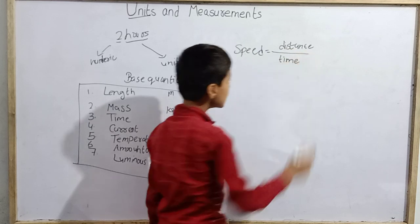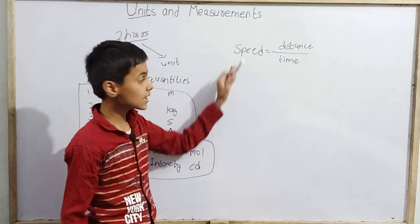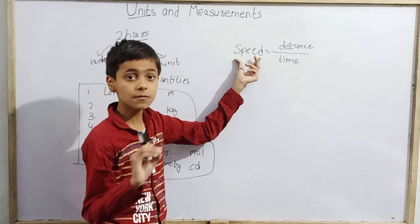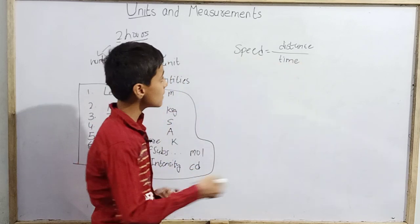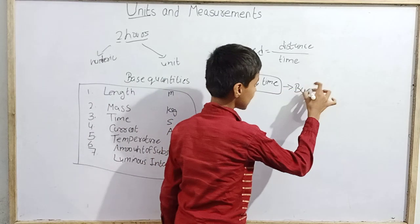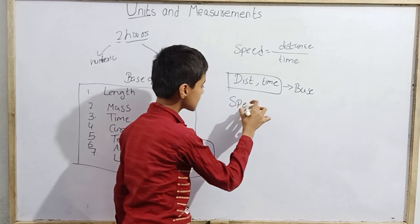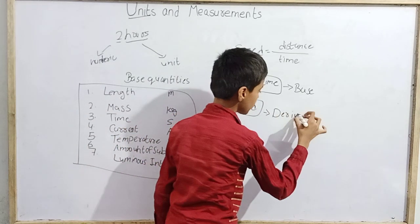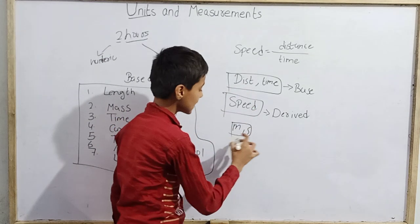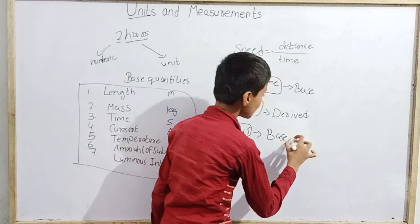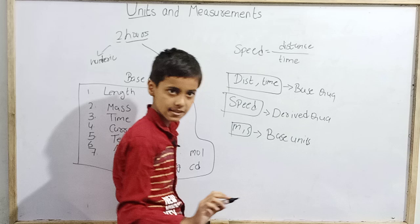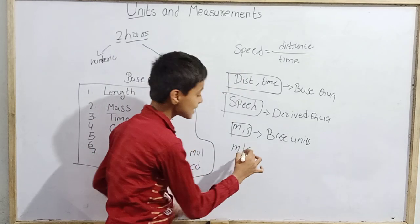Let me give an example. Speed = distance / time. Distance and time are fundamental units; speed is a derived quantity because it is derived from them. The unit of speed is meter per second (m/s) — meter and second are base units, while meter per second is a derived unit.